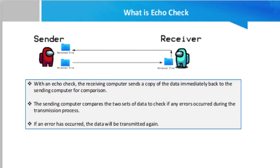There are some drawbacks of the echo check. If the two sets of data are different, you will have no way of knowing whether the error occurred when the data was originally sent or when it was sent back. Additionally, echo checks require a lot of extra data to be transmitted, which requires extra effort as well.